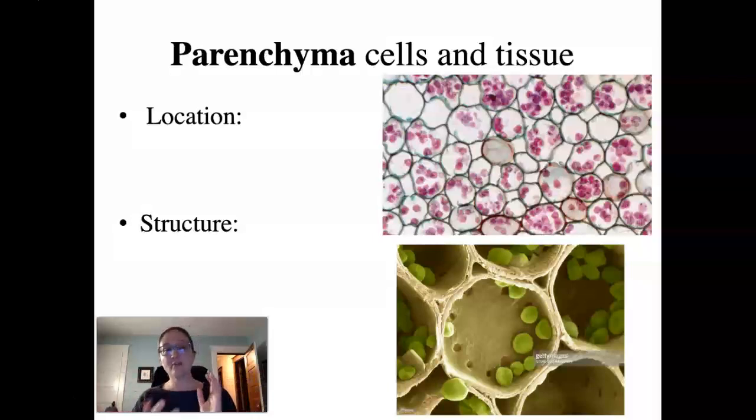It can give up its function and turn into a meristematic area if given the right circumstances. So if you cut off a branch and put it in the soil and the branch starts sprouting new roots, that's because the parenchyma tissue in the stem has become meristematic. And that's a very important function of parenchyma tissue that allows plants to grow asexually and reproduce in a clonal fashion.